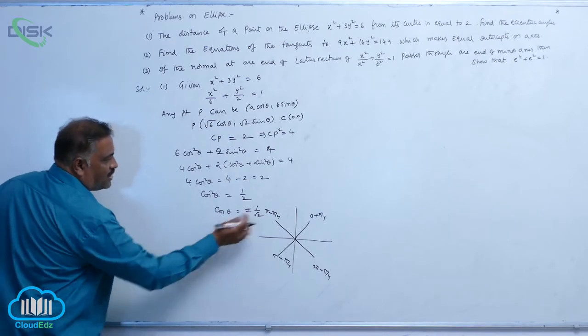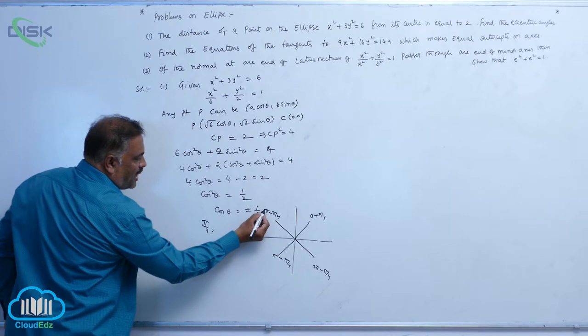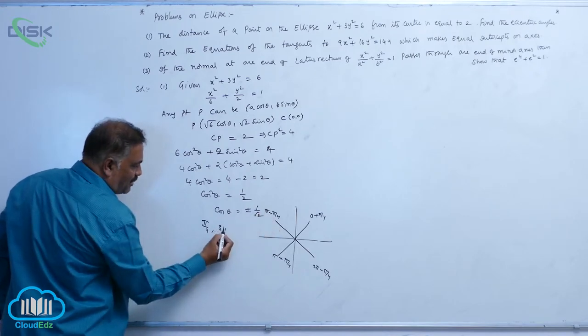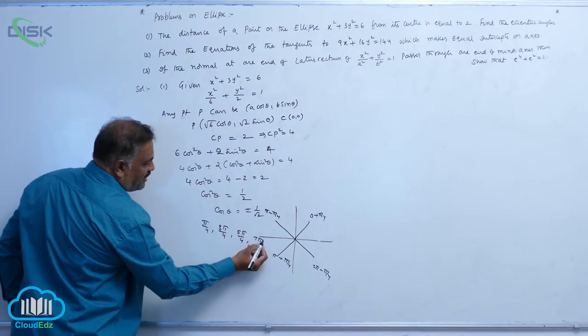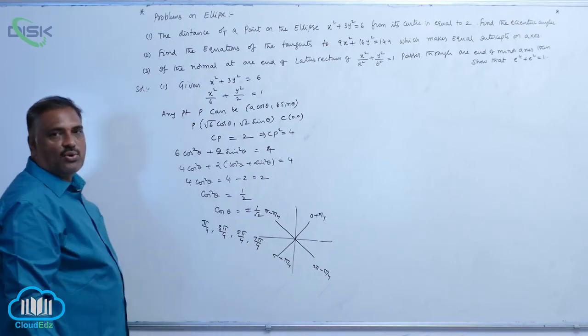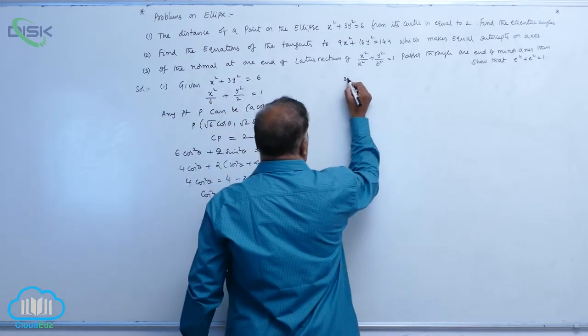What are the angles now? 0 plus pi by 4 is pi by 4, pi minus pi by 4 is 3 pi by 4, next one 5 pi by 4, next one 7 pi by 4. All these 4 are nothing but eccentric angles. Now let us come to second question.